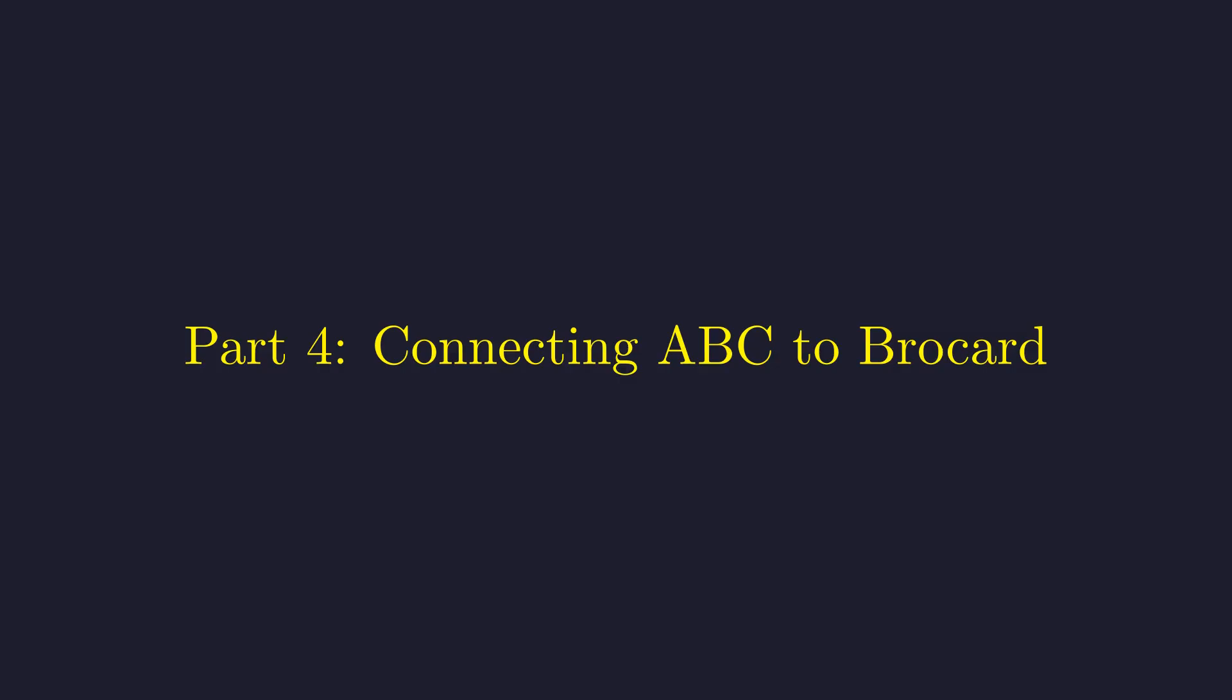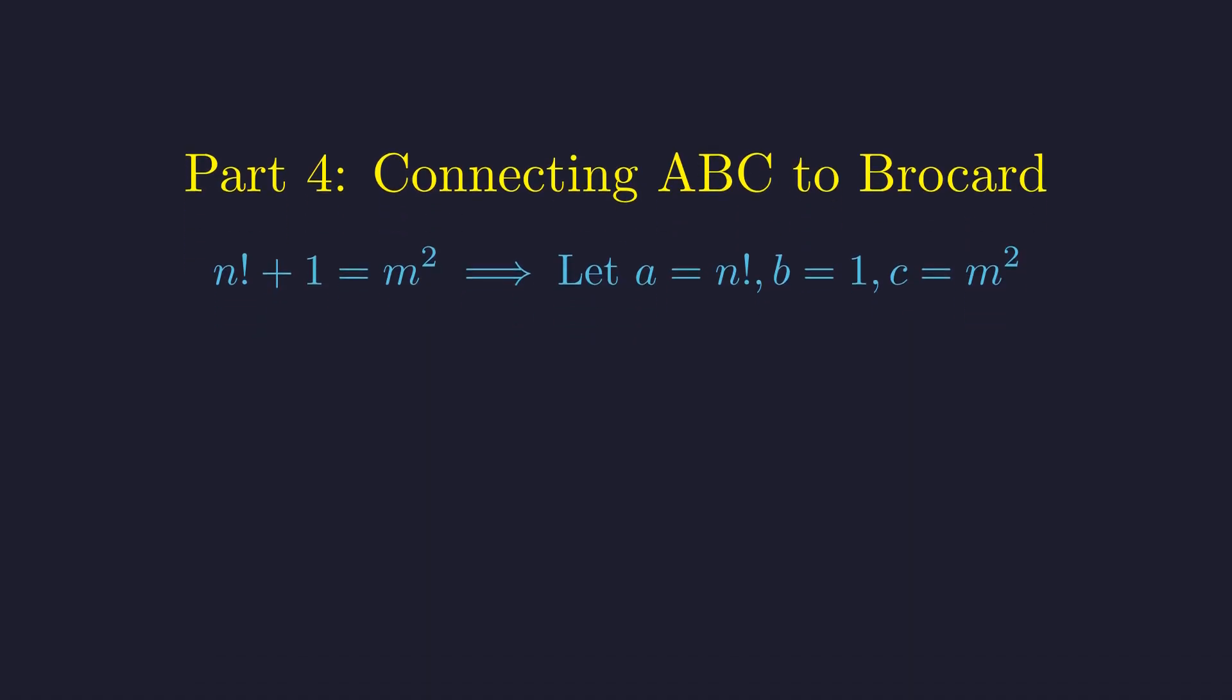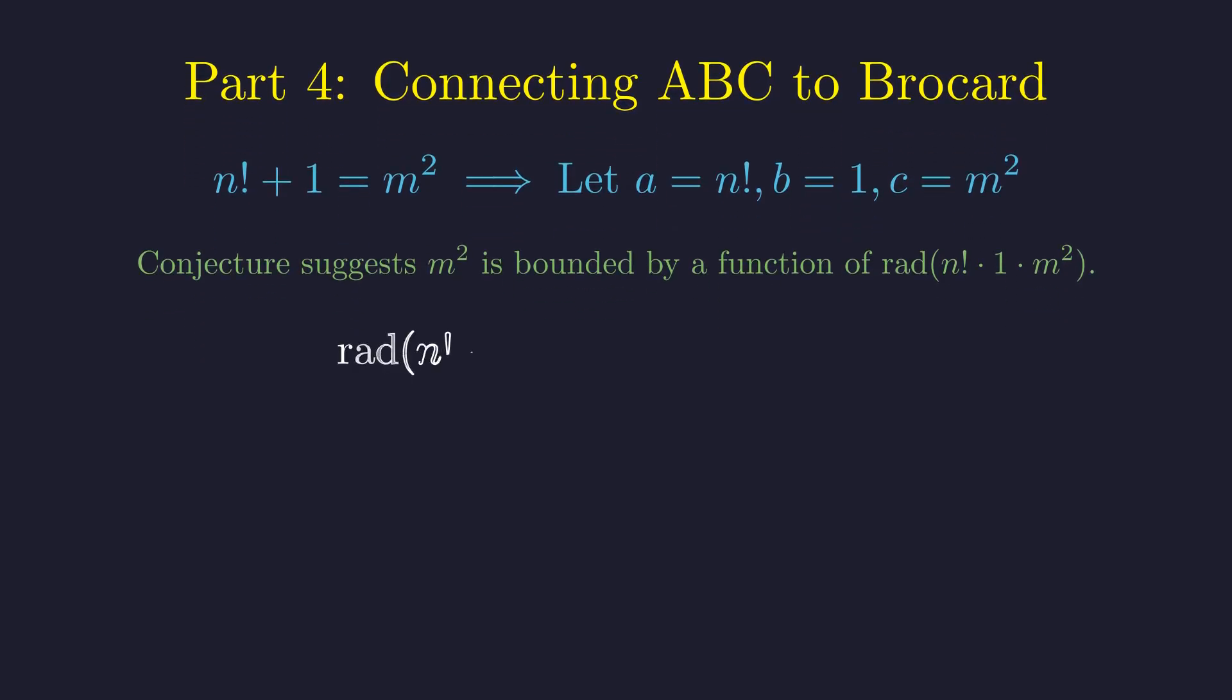How does this abstract idea connect to our factorial problem? Let's find out. We can map our equation directly to the a, b, c setup. Let a be n factorial, b be 1, and c be m squared. The conjecture provides a bound on m squared related to the radical of the whole product. The radical of n factorial times m squared is much, much smaller than m squared itself, especially for large n.